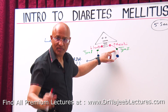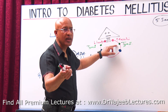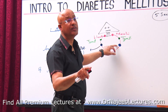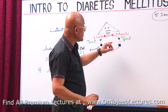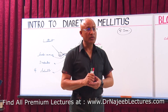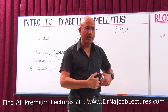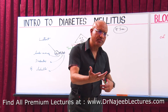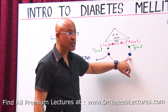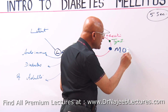Every doctor knows Type 1 diabetes classically develops at a younger age and Type 2 at an older age. But if someone develops a Type 2-like disease at a young age — for example at age 20 — the real problem is not beta cell destruction but increased resistance to the action of insulin. Insulin is present but unable to produce its action.